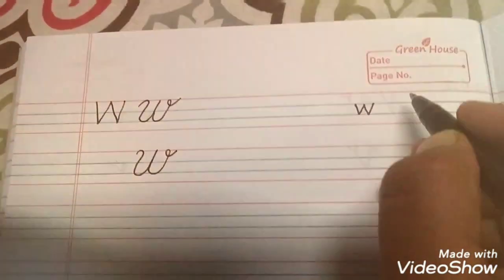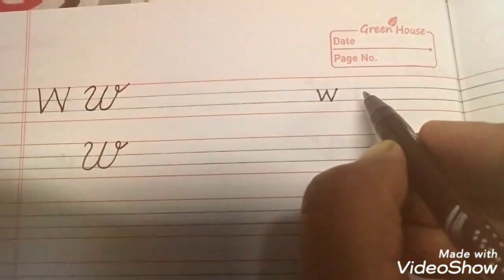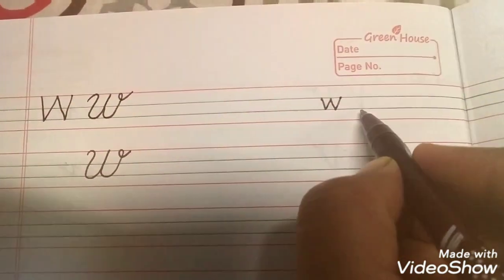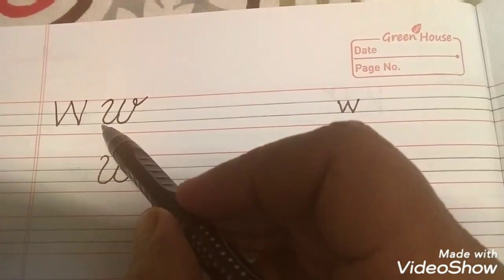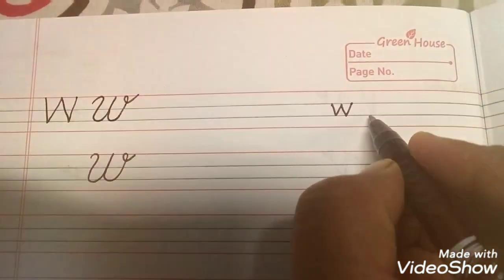And small W also we'll write in a similar manner. The only difference is isko hum blue lines ke beech mein likhenge, okay? For capital W, we were writing from red line to the bottom blue line. Now here we'll write from the top blue line to the bottom blue line.